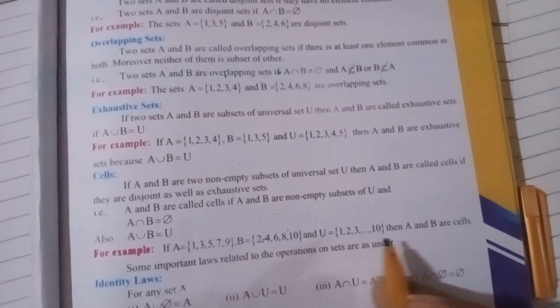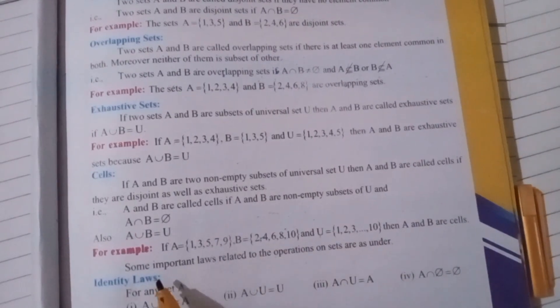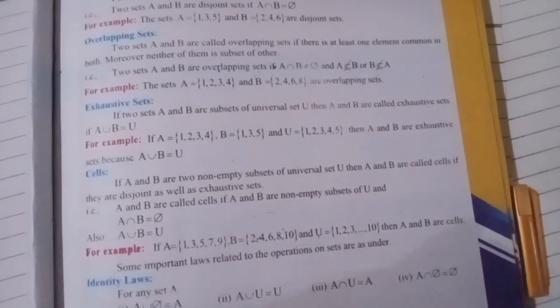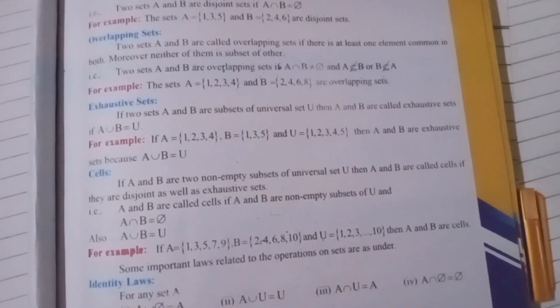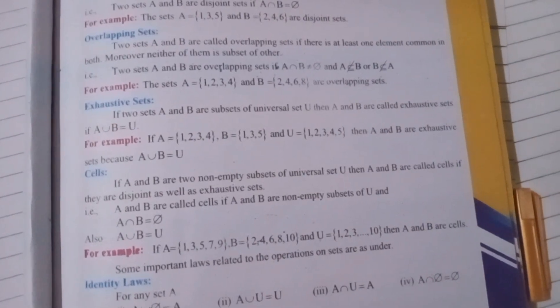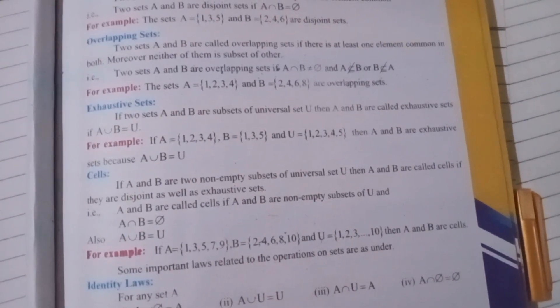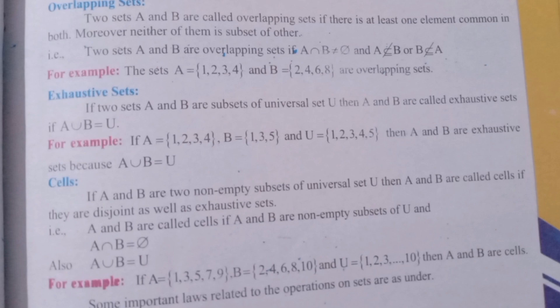For example, if A equals {1,3,5,7,9} and B equals {2,4,6,8,10}, and universal set U equals {1,2,3,4,5...10}, then A and B are cells. If we have intersection between them, our answer is null set. If we have A union B, then our answer is universal set.